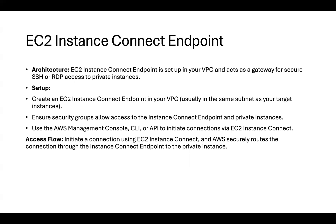In the console, under the EC2 instance connect options, there is an 'EC2 Instance Connect Endpoint' option alongside the standard EC2 Instance Connect. We need to create the endpoint first, and then we can initialize connections and utilize it to access EC2 instances in the private subnet.